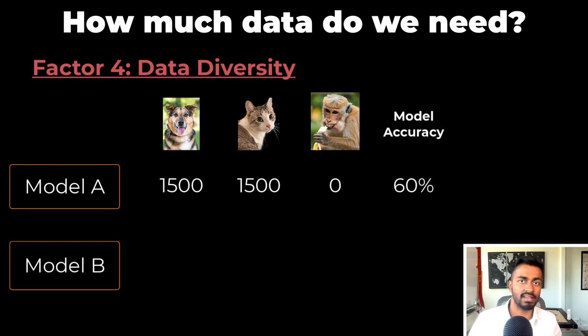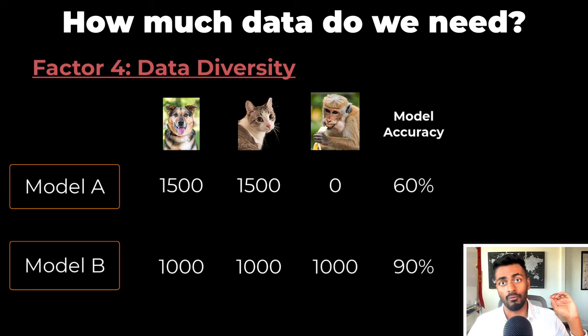The fourth factor is data diversity. Say that we train a network that can take in images and classify them as cat, dog, or monkey. A dataset with 1500 cats and 1500 dogs and zero monkeys might have a performance of 60%. But a dataset with 1000 cats, 1000 dogs, and 1000 monkeys may have a performance of say 90%. So even though the dataset size is the same in both cases, the second case is more diverse than the first and hence is able to generalize and perform better.